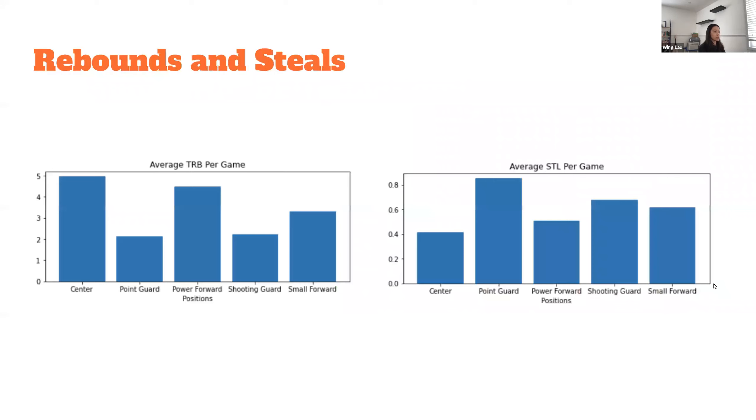Looking at rebounds and steals, you can see centers and power forwards really excel in rebounds and perform similarly. On the opposite spectrum, point guards and shooting guards also perform very similarly. Same thing with steals, centers and power forwards are similar, and shooting guards and small forwards are very similar.